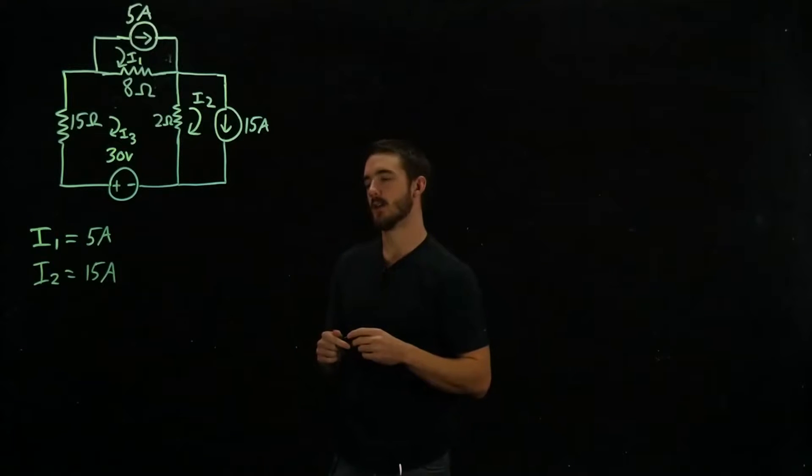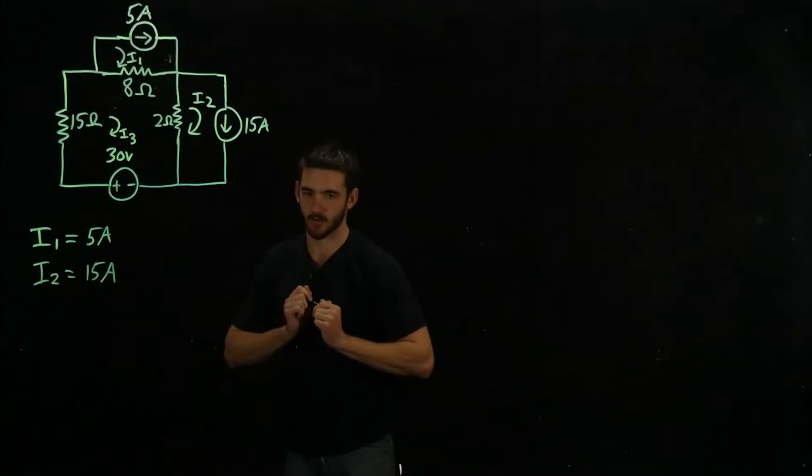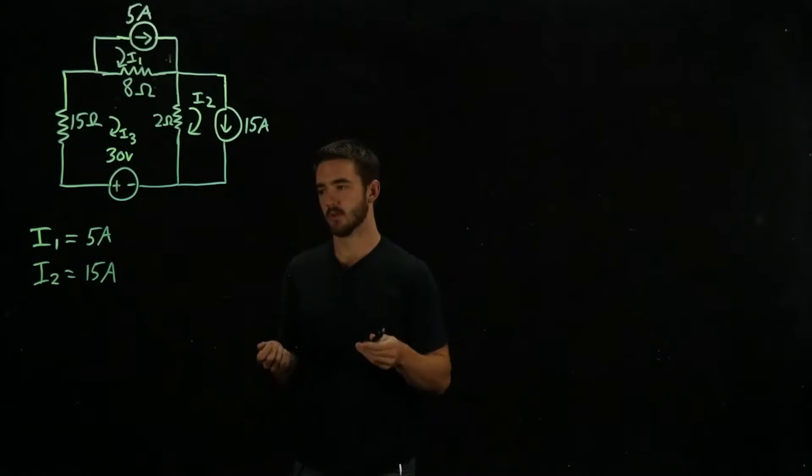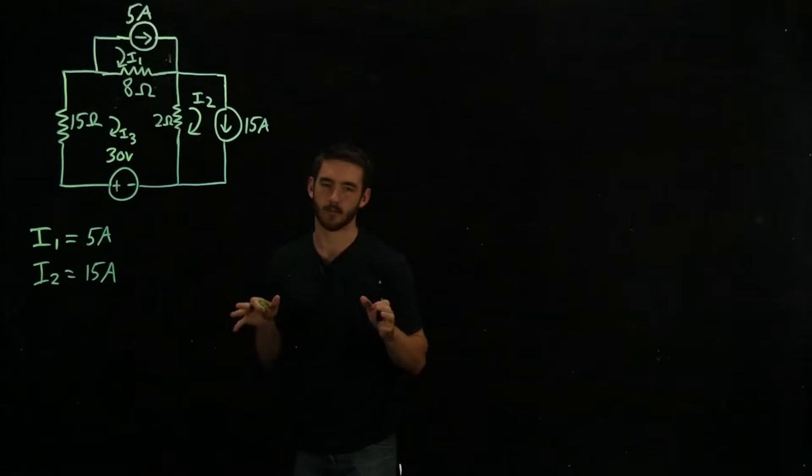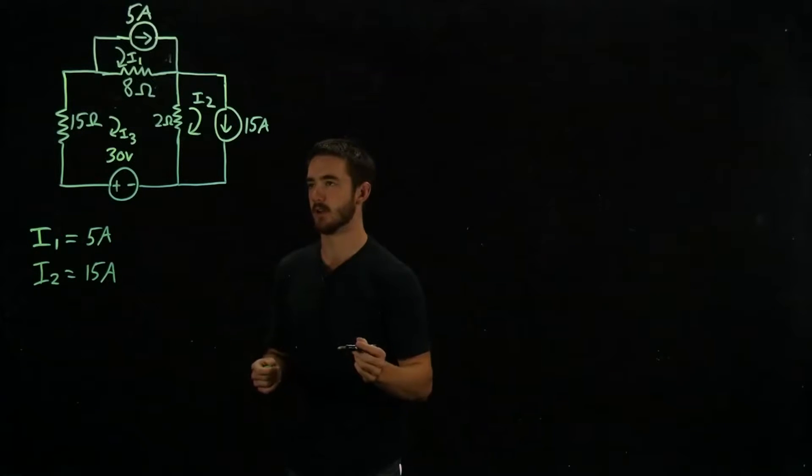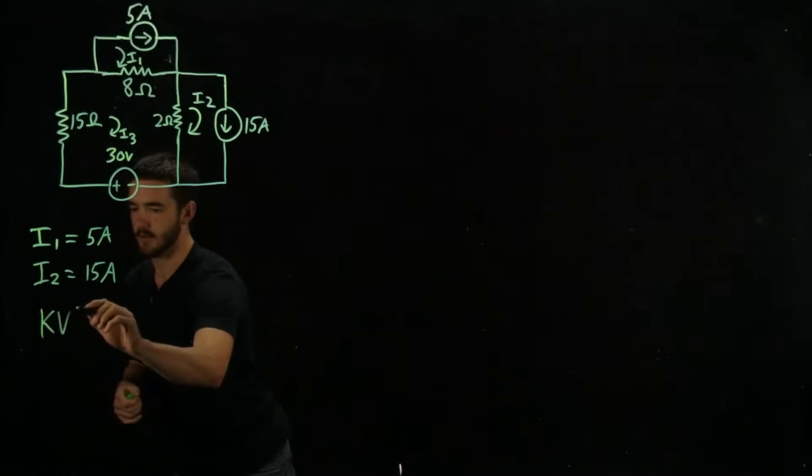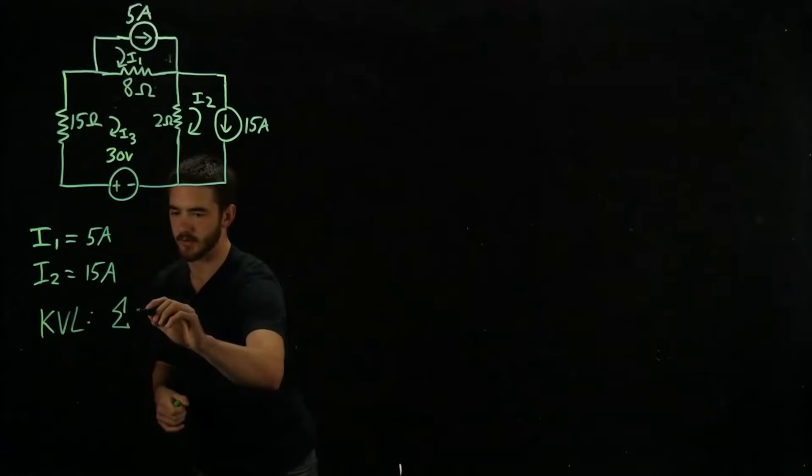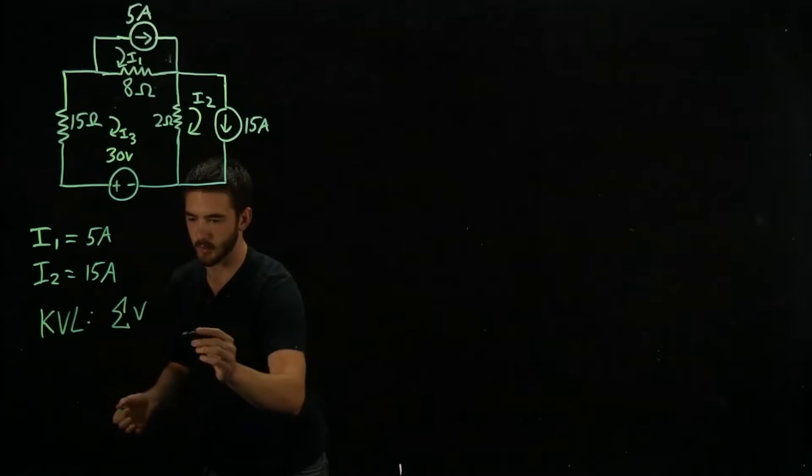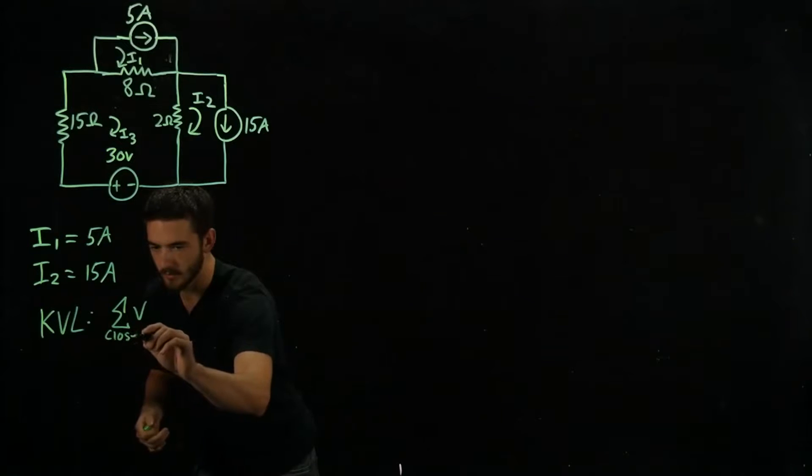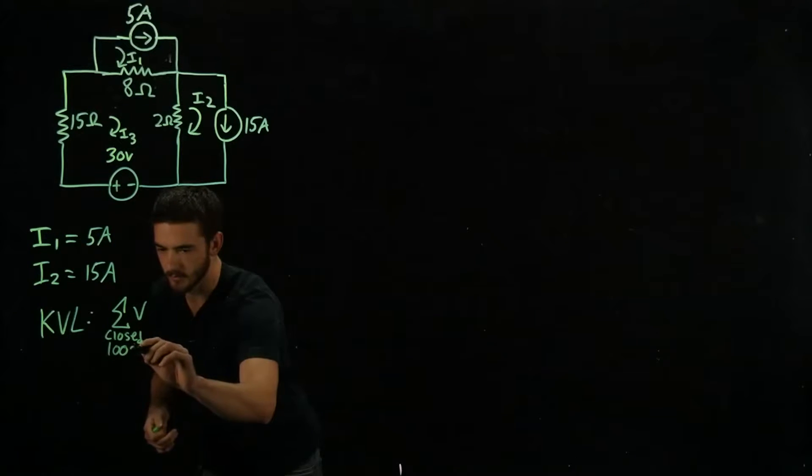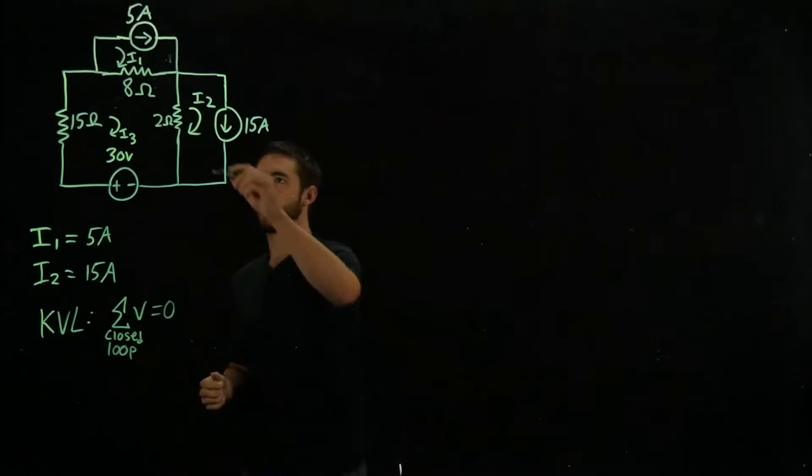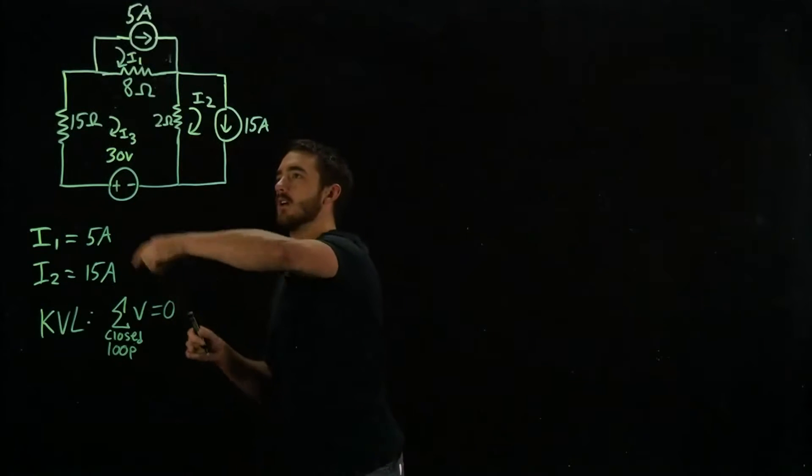So now, unfortunately, it's not as easy for I3, but we do have a way to solve this. What we've been doing is mesh analysis. So basically, the basic principle that we're utilizing here is Kirchhoff's voltage law or KVL as you might know it. So KVL states that the sum of voltages around a closed loop equals 0. So let's use that on this loop right here.